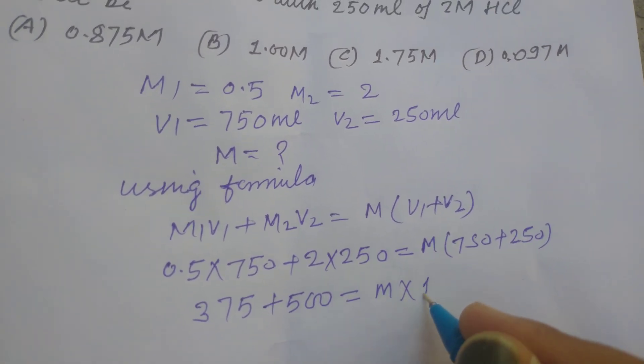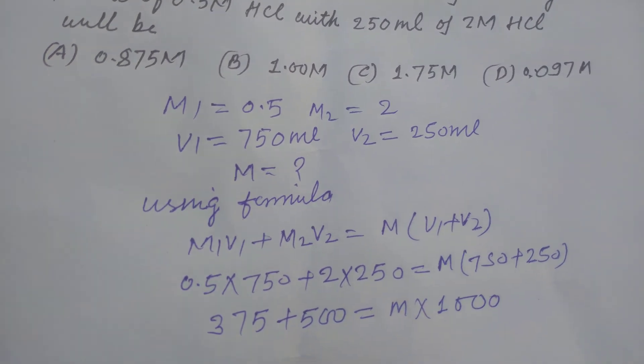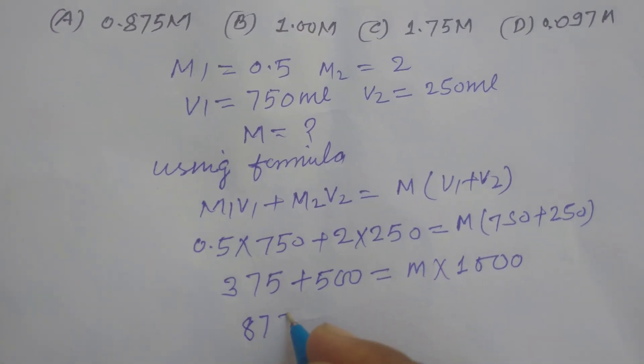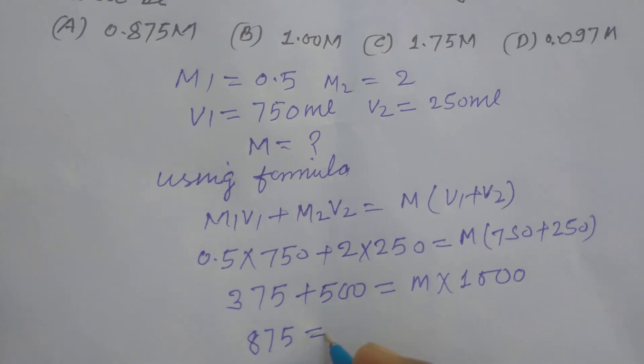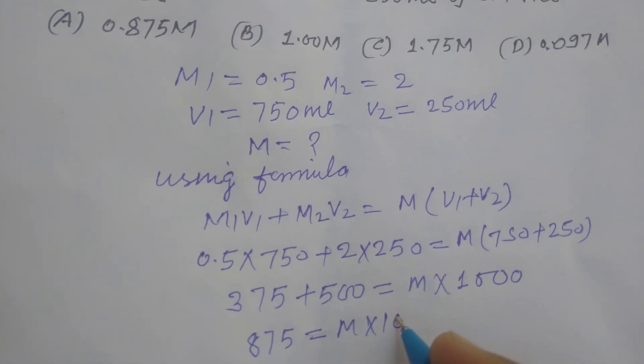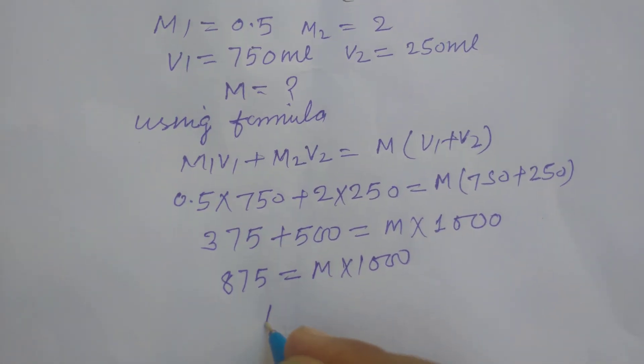this is 1000. So 875 equal to M into 1000. When we divide,